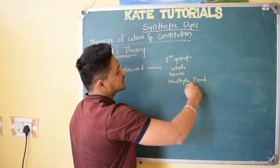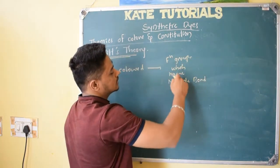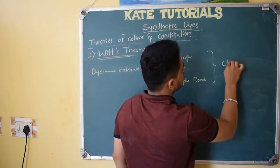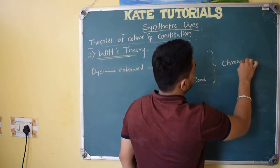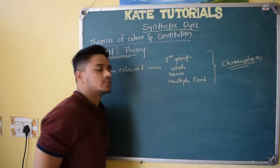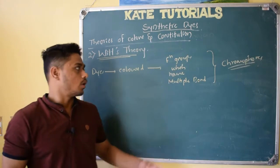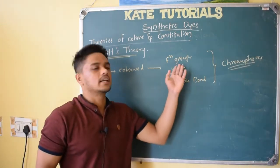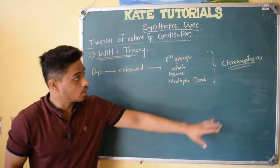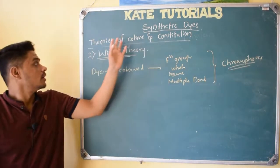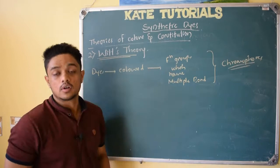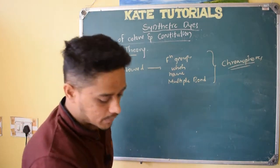This functional group which contains multiple bonds, he called it as chromophores. So what are chromophores? Chromophores are nothing but organic compounds, or I can call them functional groups, which contain multiple bonds. Because of these chromophores, he said these dyes will be colored. So let us see a few examples of chromophores.